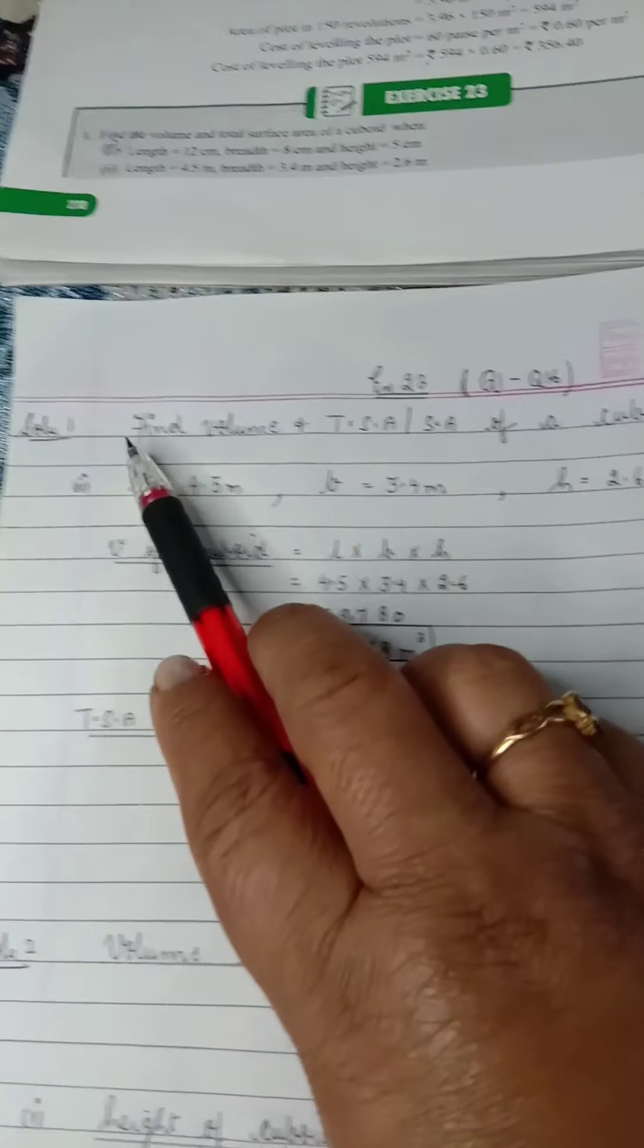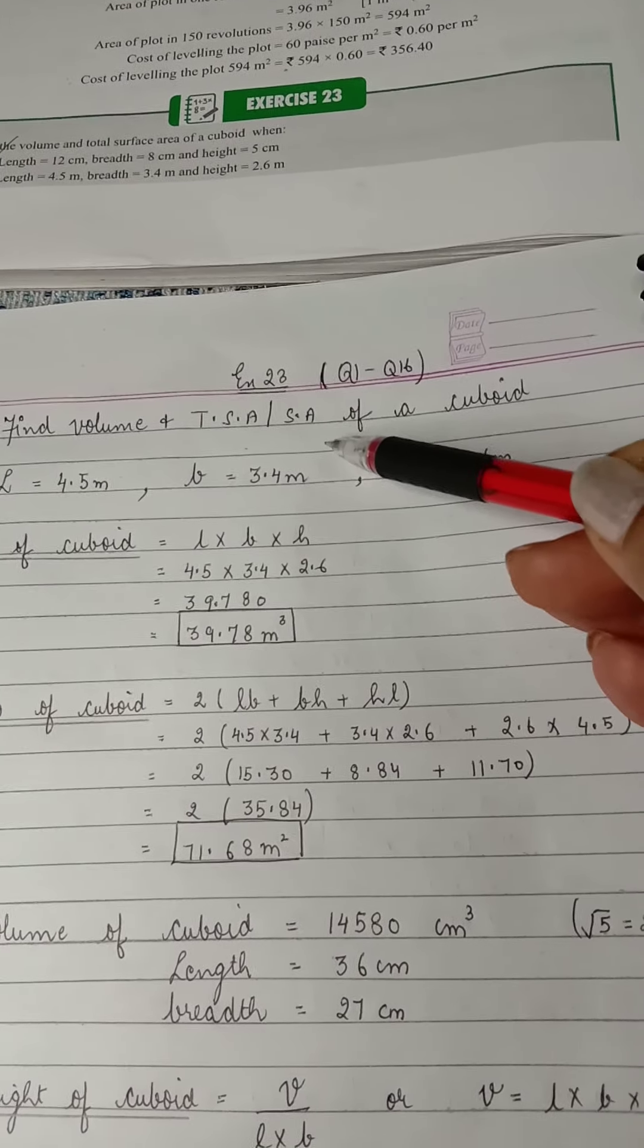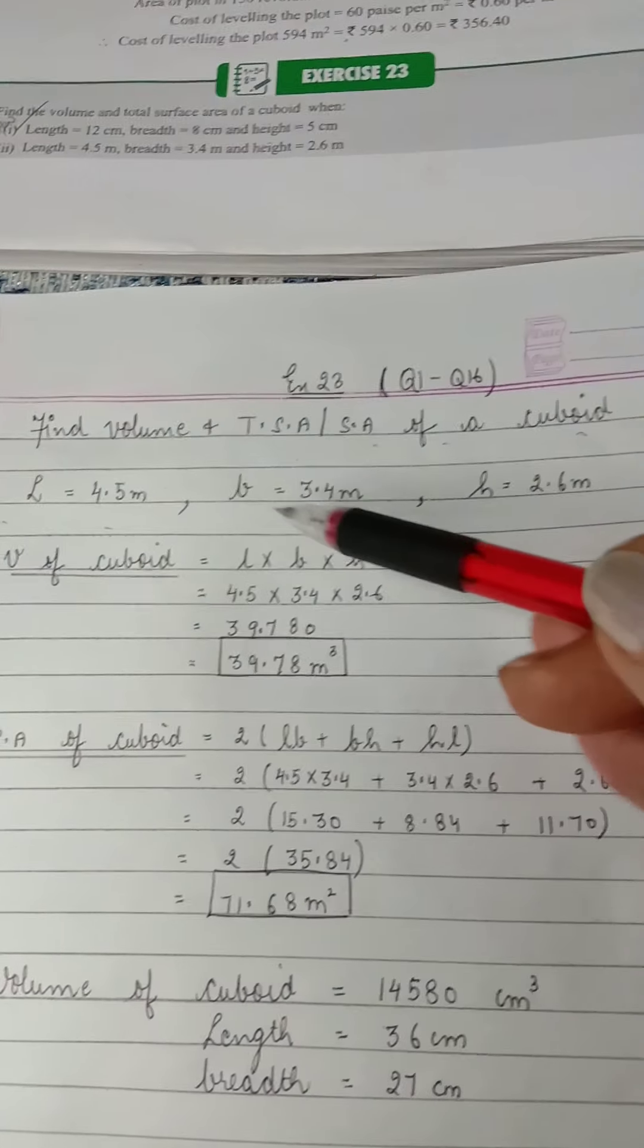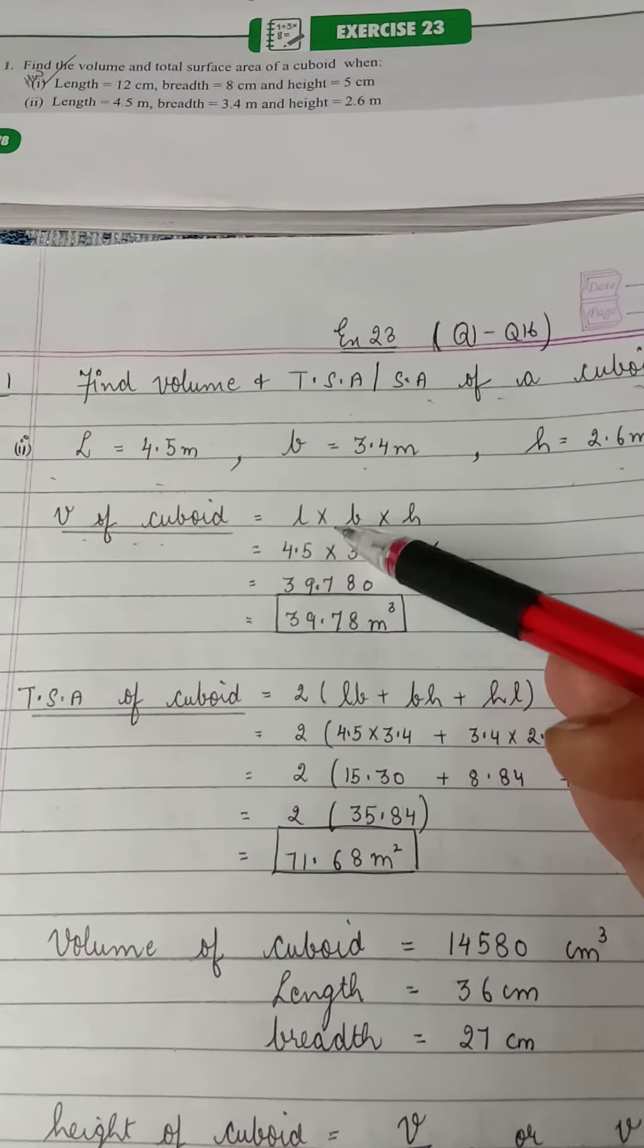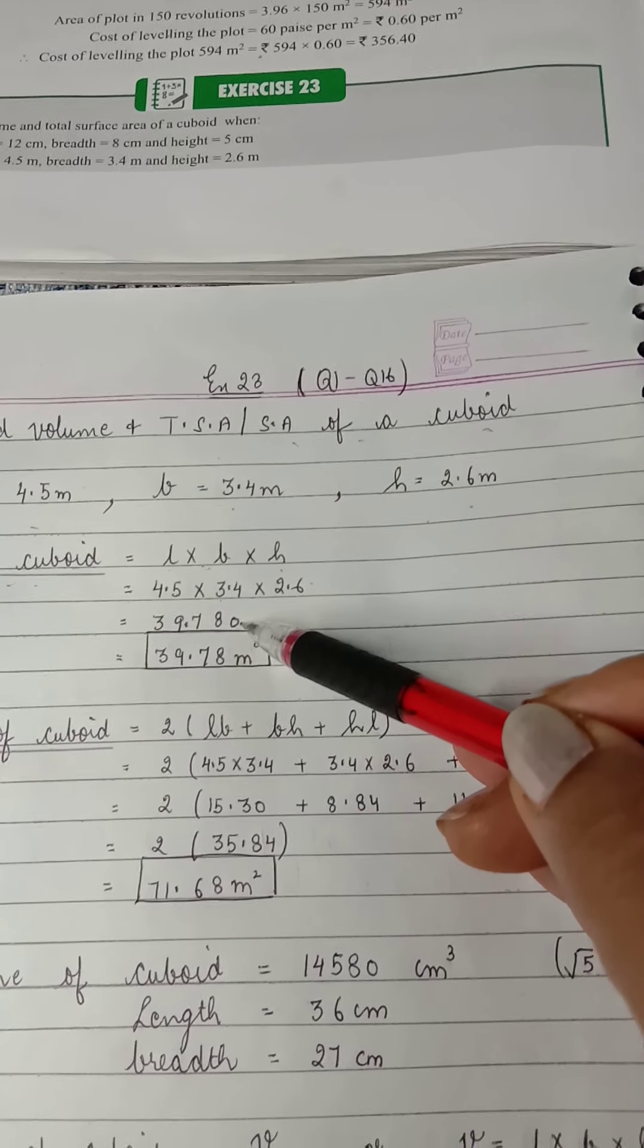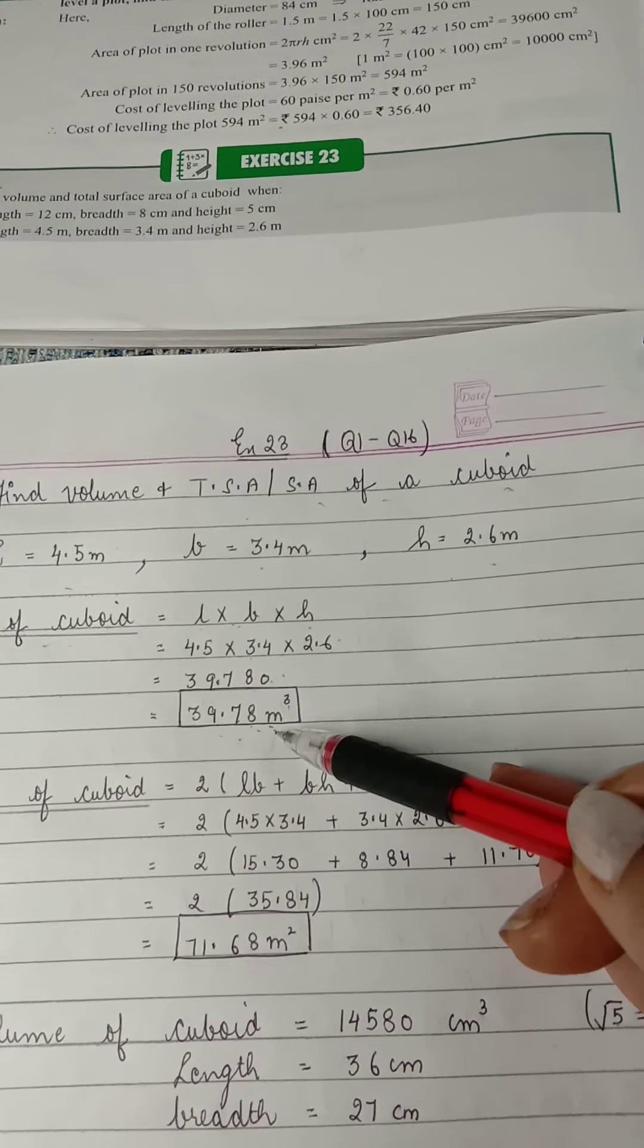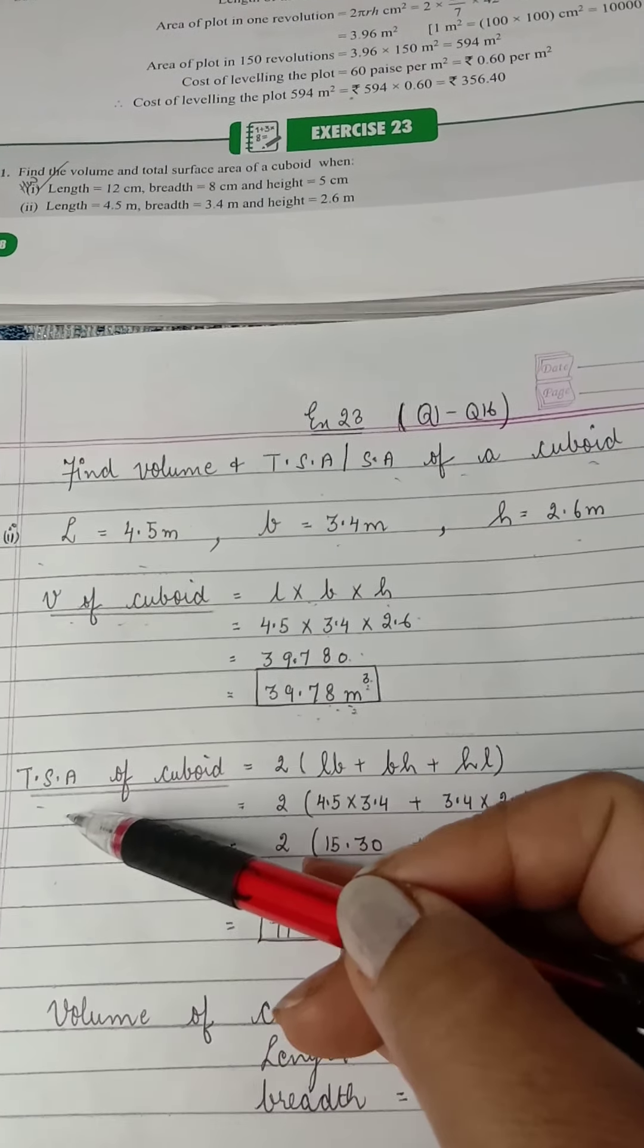Now we'll start with the exercise. In this exercise we have questions only 1 to 16. The other questions are reduced. Now starting with question number 1, you have to find the volume, you have to find the total surface area, or you can say surface area, and the figure is a cuboid. I'm doing the second part. The first part is your homework. Length is 4.5 meters, breadth is 3.4 meters, and height is 2.6 meters. What is the volume of cuboid? Please write down the formula: L into B into H. Multiply length, breadth, and height: 39.780, or we can write as 39.78, and the unit is volume. Always has a cubic unit: m cube or cubic meters.